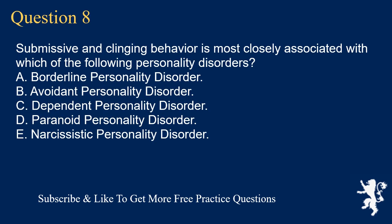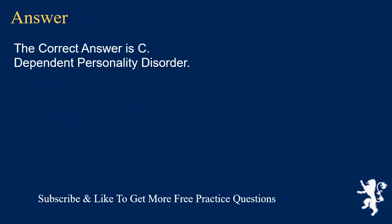Question 8. Submissive and clinging behavior is most closely associated with which of the following personality disorders? A. Borderline personality disorder. B. Avoidant personality disorder. C. Dependent personality disorder. D. Paranoid personality disorder. E. Narcissistic personality disorder. The correct answer is C. Dependent personality disorder.